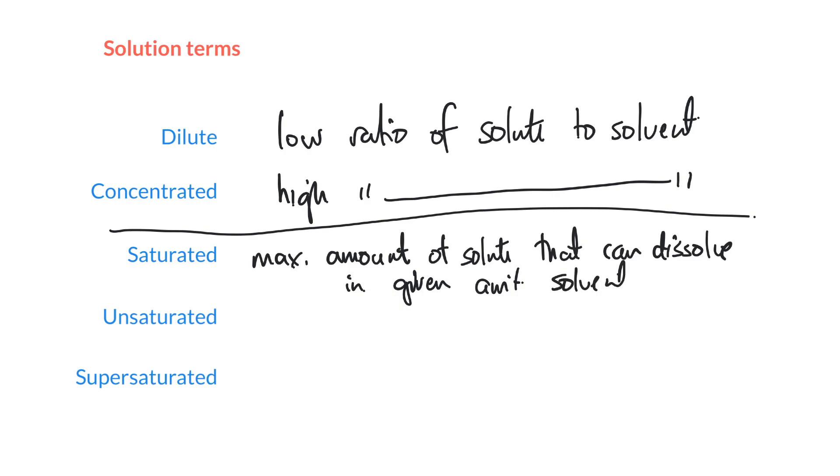And unsaturated just means that there is basically less than the maximum amount. So you could dissolve more if you like. And supersaturated seems like it shouldn't exist. Supersaturated means there is actually more than the maximum amount that can dissolve. So how is it possible to have more that can possibly dissolve? Well, it's actually unstable. So it turns out that you can trick it. And you can get it to dissolve for, you know, seconds or minutes or hours. But you're never going to be able to keep it in solution permanently.